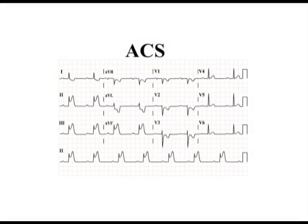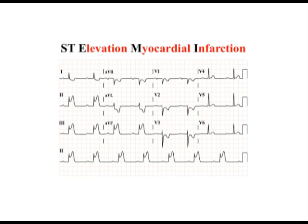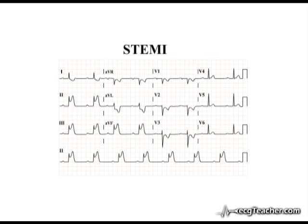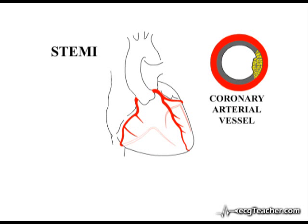The first type of acute coronary syndrome we will deal with is termed ST elevation myocardial infarction, or STEMI for short. When an atheromatous plaque ruptures in a coronary vessel and the clot which forms completely obliterates the vascular lumen, the entire thickness of the myocardial wall supplied by that vessel becomes ischemic and is at risk of infarction.